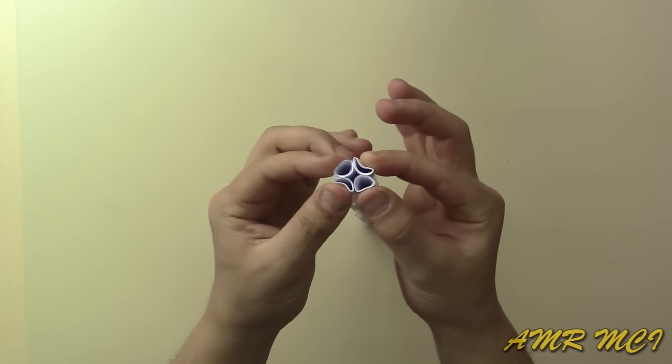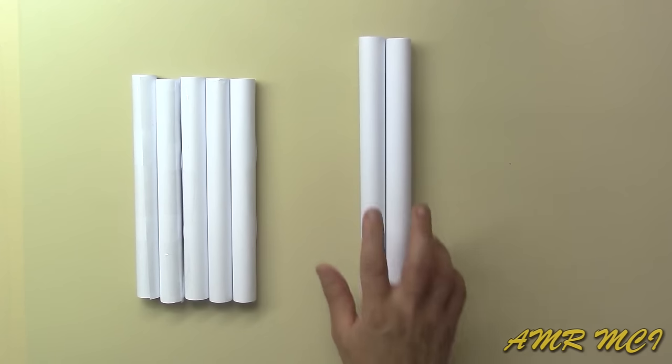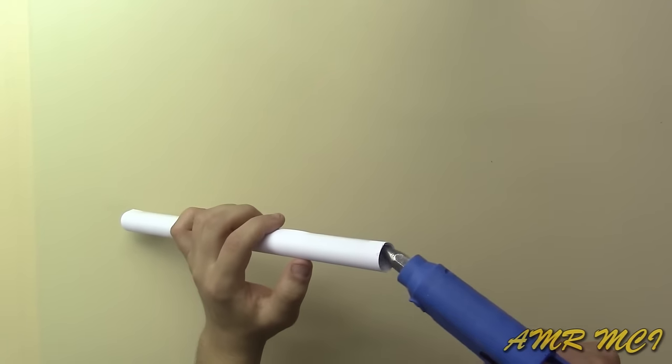After that, press on both ends of the rolls and push it to the inside. Then take the biggest two rolls and insert both ends inside each roll.